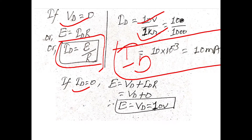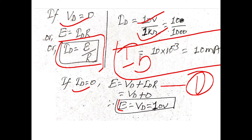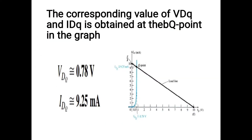Now suppose the value of ID, the current flowing across the circuit, is equal to 0. Substituting this into equation number 1, we find that E equals VD, so the value of VD is equal to 10 volts. We will now find the values of VDQ and IDQ by drawing the load line analysis graph.